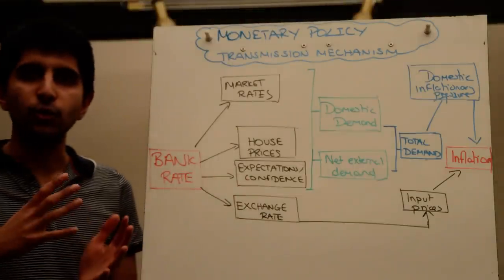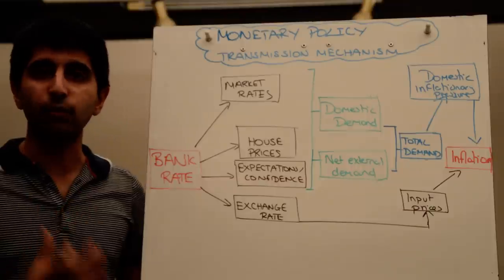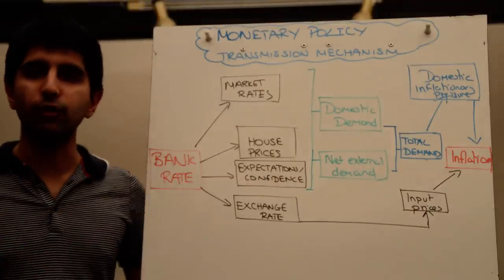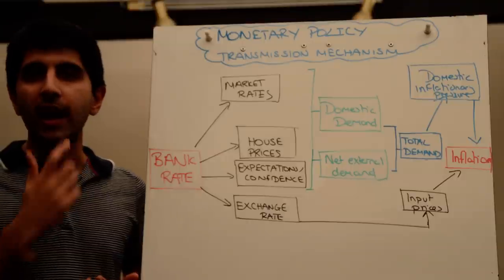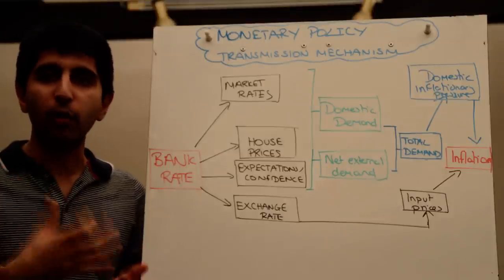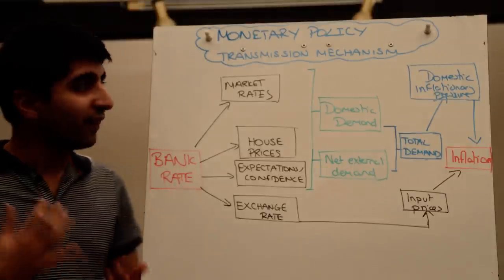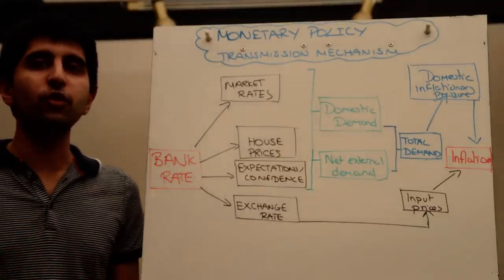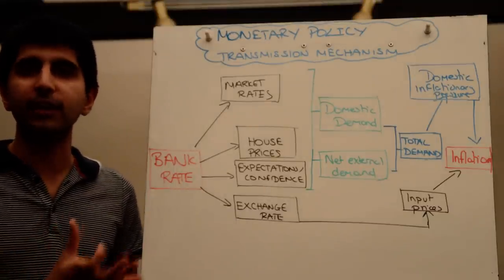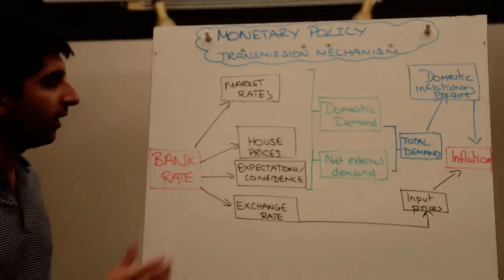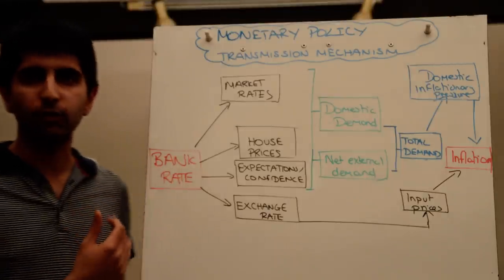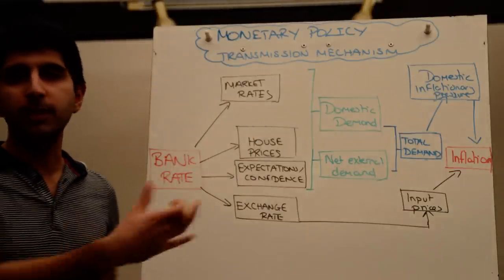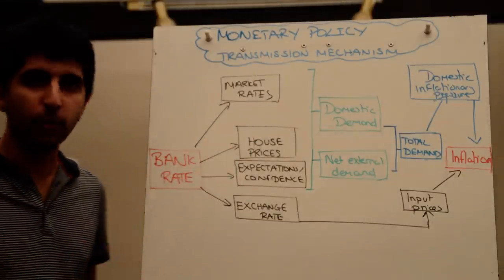Market rates are very much linked to the Bank of England repo rate — the base rate set by the Monetary Policy Committee. If the MPC decides to cut interest rates, that reduces the cost of borrowing money from the Bank of England for commercial banks, which may make it easier for them to charge lower rates to consumers who want to take out loans. So a cut in the Bank of England base rate should feed through to a cut in general rates in the economy — rates by which people actually take out loans and mortgages.